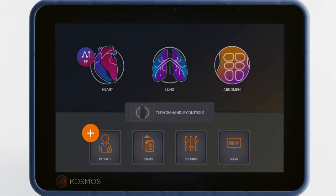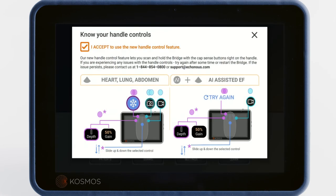Turning on handle controls is optional. To toggle handle controls, simply press the handle control button on the home screen.